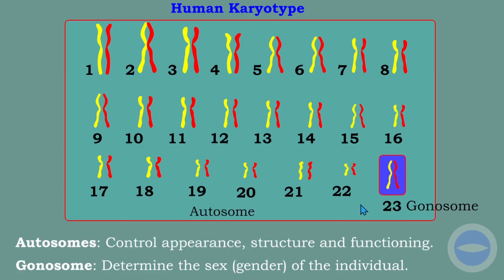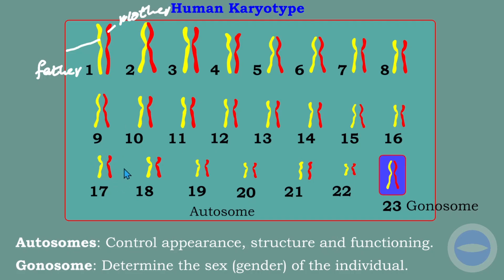Chromosomes come in pairs — we actually have 46 chromosomes, but because they are in pairs we say 23. We have chromosomes from the father (paternal) and chromosomes from the mother (maternal). Each pair here are homologous chromosomes — one from father, one from mother. They have the same characteristics and this applies to the sex chromosomes as well.